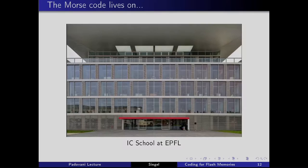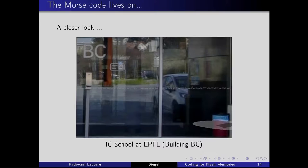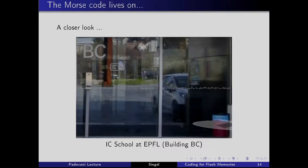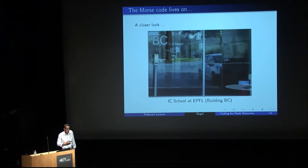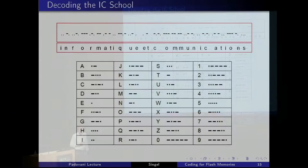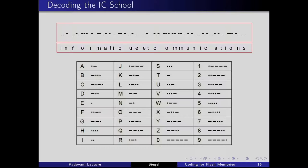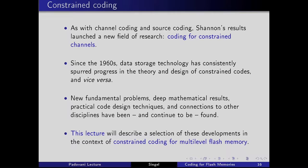There is one place where Morse code lives on — the one instance in my life when I actually had to decode something using it. The IC school at EPFL in Lausanne has dots and dashes on its sliding doors. Upon closer inspection it's a periodic repeating sequence, and decoding it with a Morse code table reveals it says 'informatique et communication.' It's probably the last time I'll ever use Morse code.